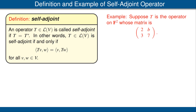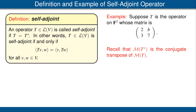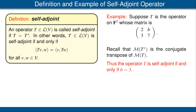Let's look at an example. Suppose T is the operator on F² with the standard inner product, whose matrix with respect to the standard basis of F² is the matrix shown here. Notice there's a variable b in the upper right-hand corner. Recall that the matrix of the adjoint of T is the conjugate transpose of the matrix of T, obtained by interchanging the rows and columns and then taking complex conjugates. Thus, the matrix of the adjoint of T will equal the matrix of T if and only if b equals 3. Thus this operator is self-adjoint if and only if b is equal to 3.